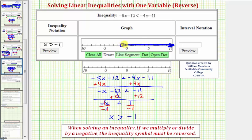Another way, instead of using open and closed points, would be to use parentheses or square brackets. An open parenthesis is used when the end point is not included. A square bracket is used when the end point is included.